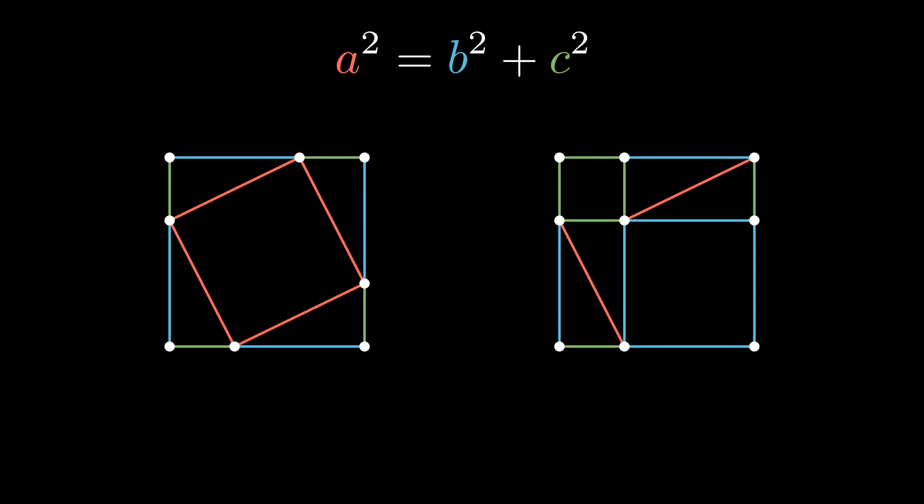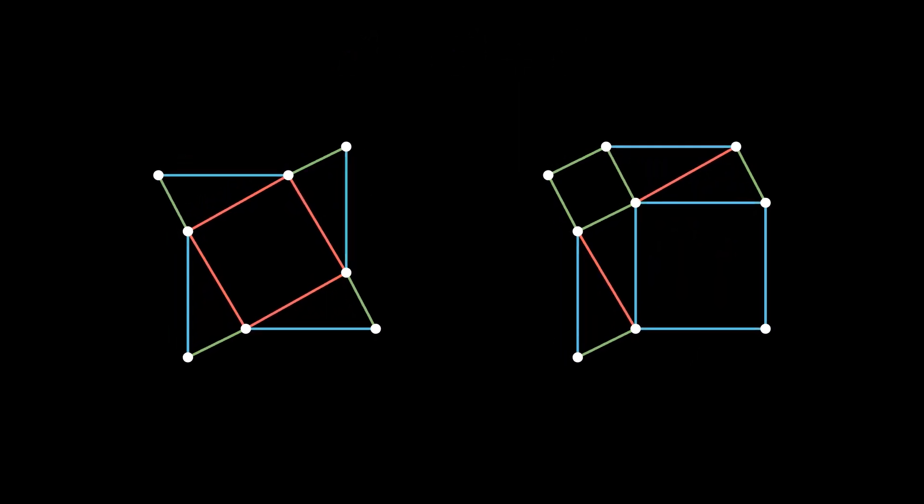The thing that I love about this proof is that you can capture it in a single image, this one right here. And the proof works for any right triangle. The diagrams are flexible. Well, that's not right. Maybe we can salvage this.